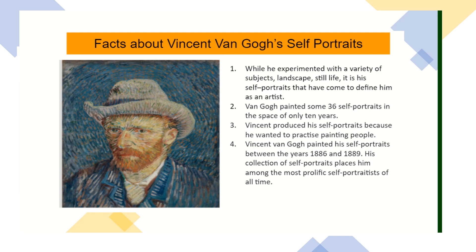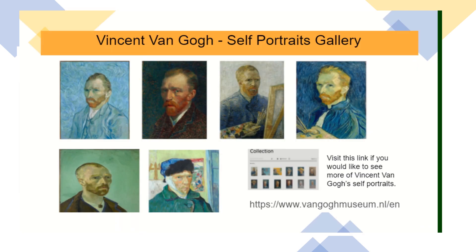Vincent van Gogh painted many self portraits — this is one of them here. While he experimented with a variety of different subjects like sunflowers, landscapes and still life, he is quite famous for all of his self portraits. He actually painted 36 self portraits in only 10 years, and he painted himself because he wanted to practice painting people. These over here are some of his self portraits from different times in his life. If you would like to see more, you can visit the Van Gogh Museum website — they have his whole collection of self portraits.